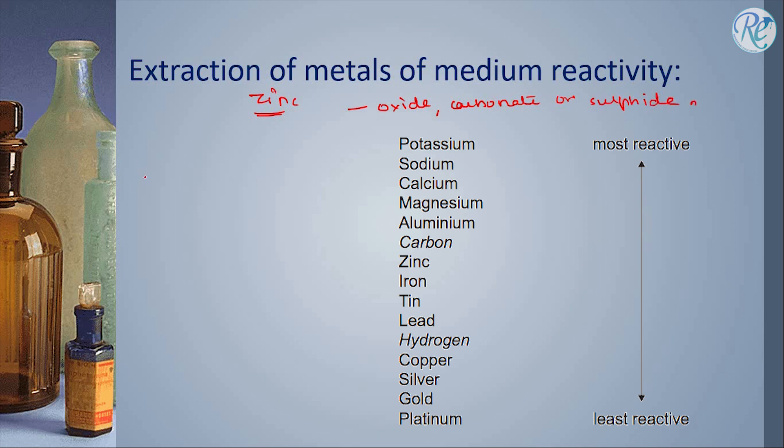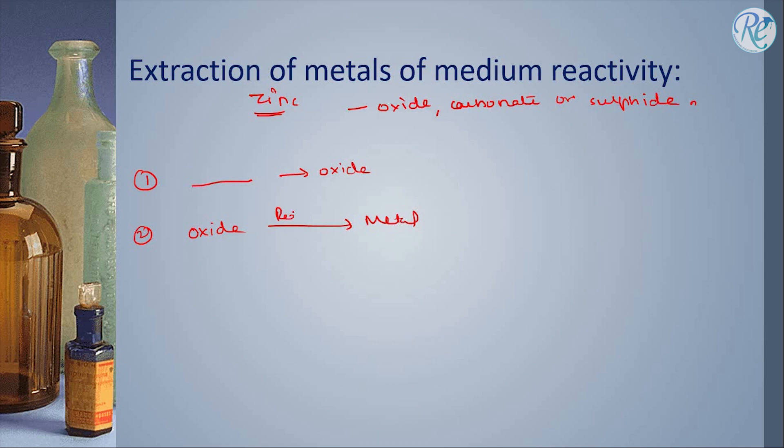The process goes like converting the compound into its oxide form because it is easy to reduce oxide, and in the next step we reduce oxide to metal. The second step is the process of reduction.